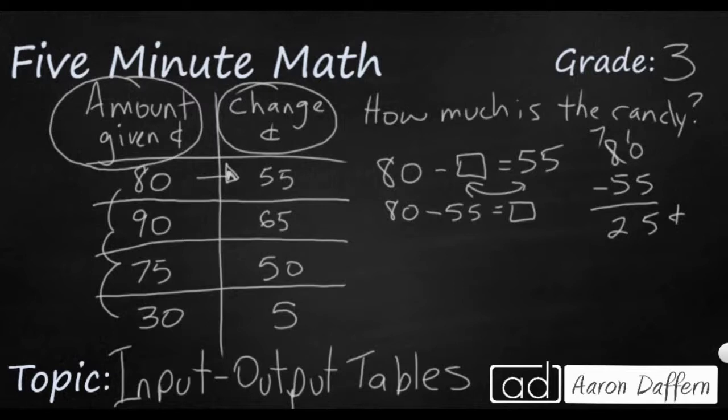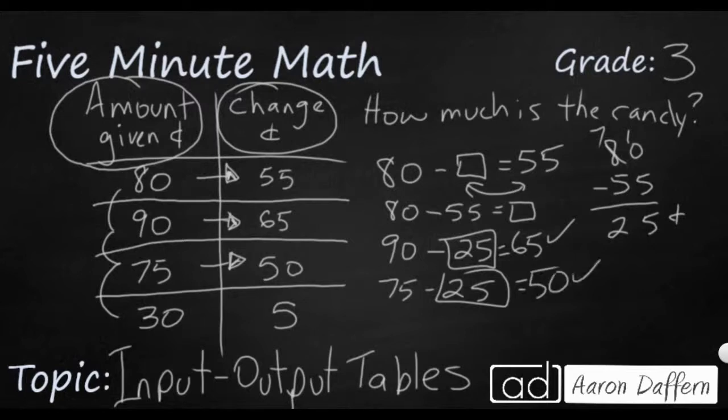Let's make sure this 25 works in all the rest of these. So we can say 90 minus 25, because that's our missing number right there. Does that make 65? Yes, it does. Let's look at 75 and 50. 75 minus 25, yep. If you take three quarters and you get rid of one of those quarters, you're only going to have two quarters left. That's 50. And then finally, we've got our 30. Take away our missing number of 25, and that's going to equal 5. Yes, it is.